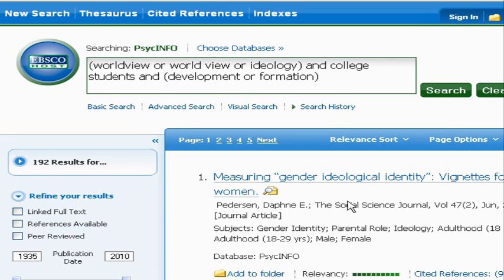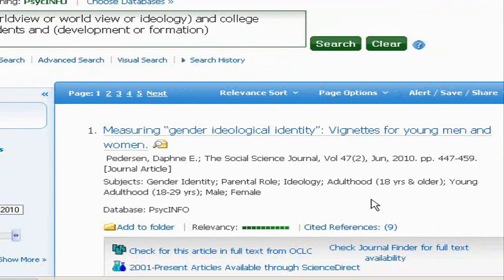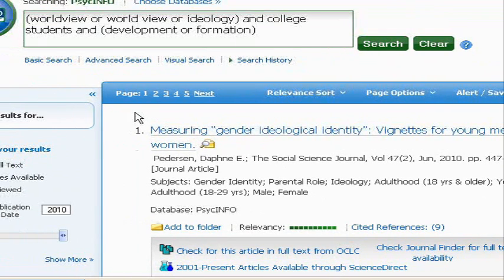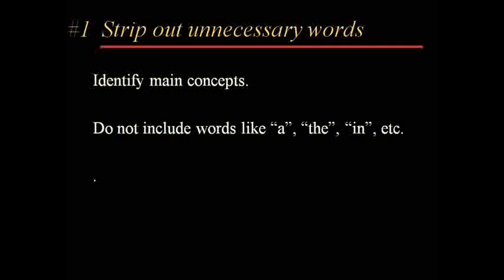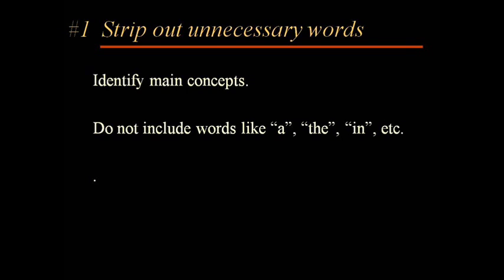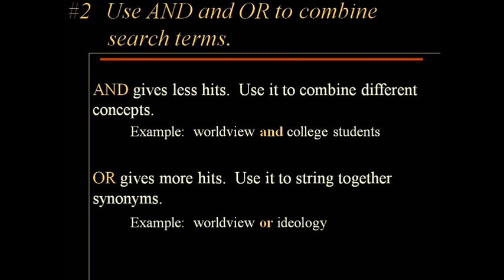We still maintain the relevancy of the articles that we're getting, but we're able to really affect the number of results and keep it within a manageable level — that's the power of AND and OR. When you're thinking about structuring your search, keep a couple of things in mind. Remember to strip out all the unnecessary words; don't type your search term in as you would say it. Just identify the main concepts. Take out any little words like a, and, among, and stuff like that — you should only have your main concepts and a connecting word like AND or OR between them. Remember that AND always gives you fewer hits; the more things you AND together, the less you get. You can use that to combine different concepts like worldview AND college students.